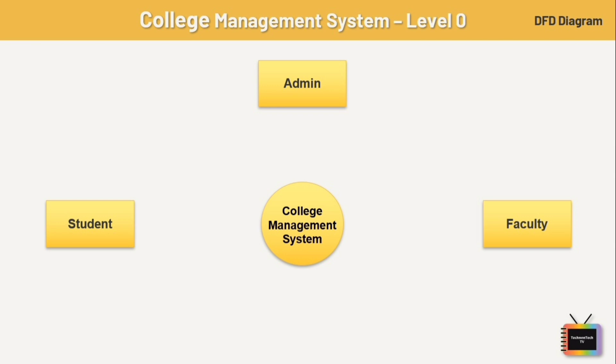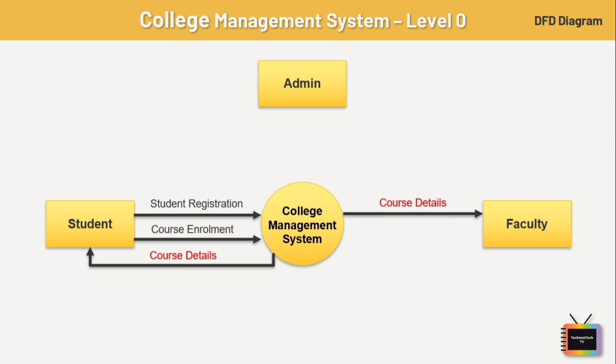First, let's see the relationship between student and the college management process. First is student registration — data flows from students to the college management system to register new students. Next is course enrollment — data flows from student to college management system to enroll in courses. Next is course details — data flows from college management system to student and faculty to provide information about courses.